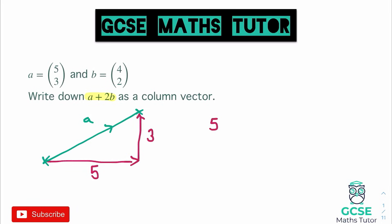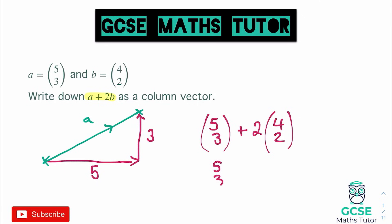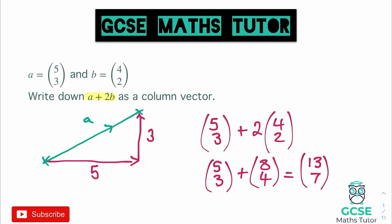Vector A is 5 over 3, and we're going to add to that 2 lots of B. Putting the 2 outside the bracket gives us 2 lots of 4 over 2. Multiplying through, we get 5 over 3 plus 8 over 4 — just doubling those vectors. Adding the top numbers: 5 and 8 gives a movement across of 13. On the bottom, 3 and 4 gives a total upward movement of 7. So our final vector is 13 over 7.